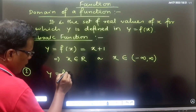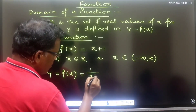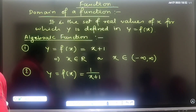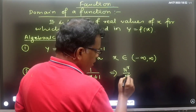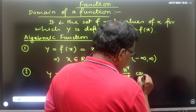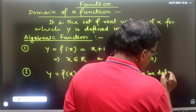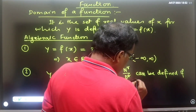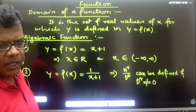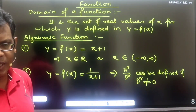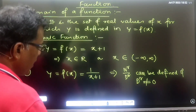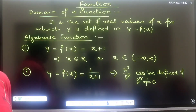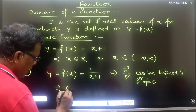Now consider a function y = f(x) = 1/(x+1). Here x appears in the denominator. The simple concept is: in any mathematical function, numerator divided by denominator can be defined only if the denominator is a non-zero quantity. So I can't allow x + 1 to be 0.